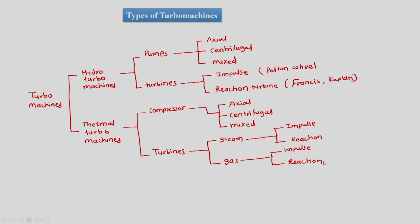If the working medium is liquid, it is classified into work absorbing machines (pumps) and work producing machines (turbines). Thermal turbo machines deal with large density variation and again have work absorbing machines (compressors) and work producing machines (turbines). The work producing machine, depending upon its working medium, can deal with steam or gas. So the basic working medium determines the classification. These are the types of turbo machines in general.